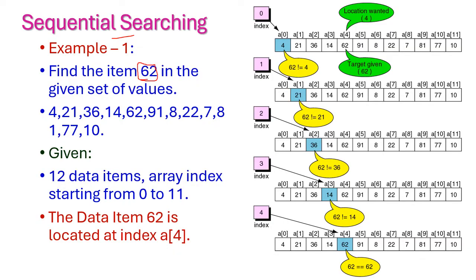Now let us see one example for sequential searching: find the data item 62 in the given set of values. These are the given set of values — totally we have 12 data items: 4, 21, 36, 14, 62, 91, 8, 22, 7, 81, 77, and 10. The index starts from 0 to 11, giving 12 items. We need to find whether the data item 62 is present in this list or not.